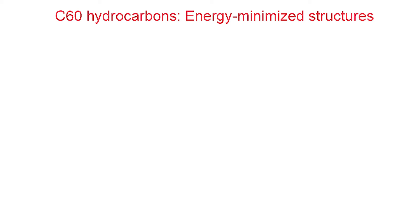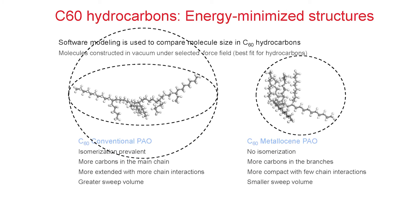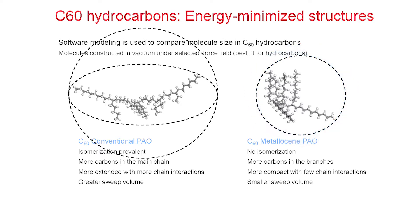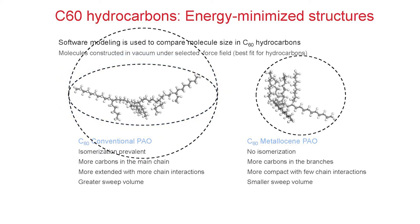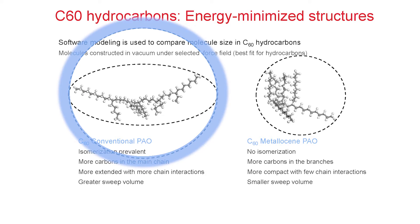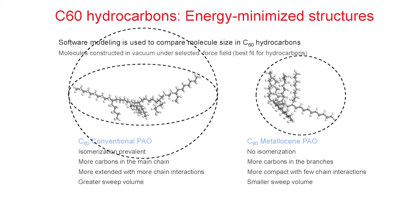Let's look at some of the differences between a PAO produced with a conventional catalyst and one using a metallocene catalyst. Using software modeling, we can compare the molecular size in a C60 hydrocarbon. Molecules in this model are constructed in vacuum under a selected force field best fit for hydrocarbons. The sweep volume of the MPAO on the right can be visualized by drawing the smallest encapsulating sphere possible. The oval encapsulating the CPAO is much wider, and if rotated, it would form a much larger sphere. The conventional high-viscosity PAO has significant isomerization that produces branch lengths and extends the main chain, whereas the MPAO has no isomerization, longer average branch lengths, and a more compact structure.